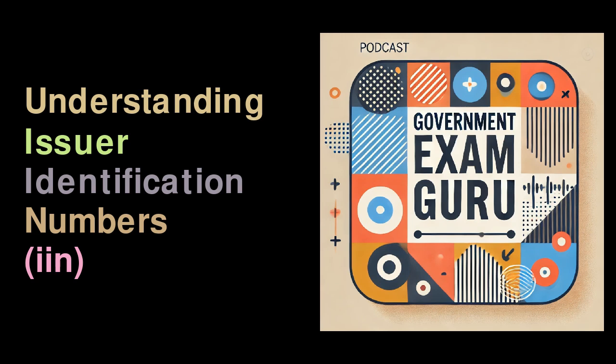What is an Issuer Identification Number (IIN)? The Issuer Identification Number, often referred to as the Bank Identification Number (BIN), is a unique sequence of digits found on payment cards such as credit, debit, and prepaid cards. The IIN helps identify the institution that issued the card, as well as the specific card processing network involved, such as Visa or MasterCard.